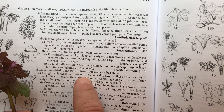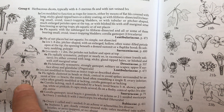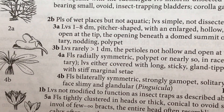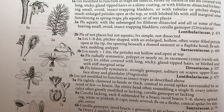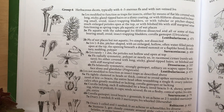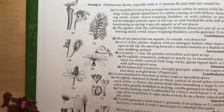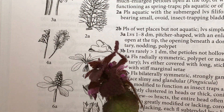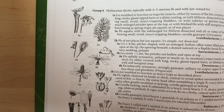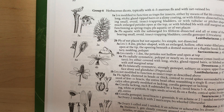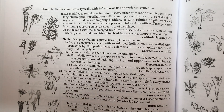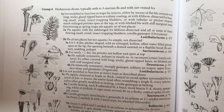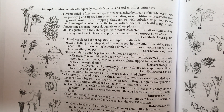Flowers tightly clustered in heads or thick conical to ovoid spikes. You can see some examples of what they're talking about here for 5a and 5b, because of what you can see in 6a — where we have the flowers clustered in a tiny little head. These are clustered flowers, but they're not in a tight little head; we've got leaves in between the individual flowers. So we won't say that these are flowers clustered in heads or thick conical spikes surrounded by an involucre of a few bracts. That would be something in the Asteraceae, which we'll get to later.